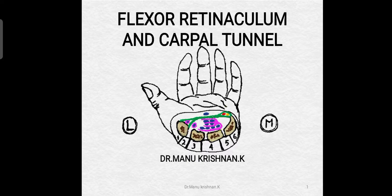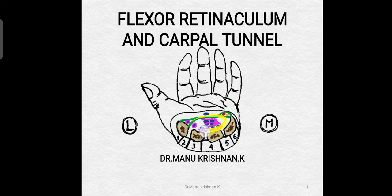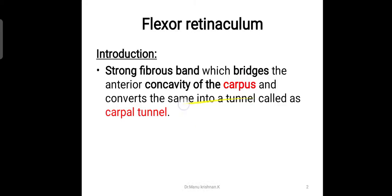First we will see what are the carpal bones, then we will see how this green color region — that is nothing but the flexor retinaculum — how it is formed, and we will see which are the structures passing below this particular flexor retinaculum. Here you can see a tunnel-like space, and that tunnel is nothing but the carpal tunnel. So let's see everything in detail.